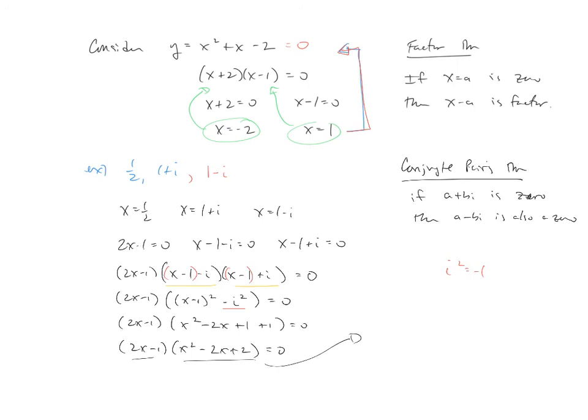So assuming you can multiply a binomial with the trinomial, our final answer should be 2x cubed minus 5x squared plus 6x minus 2.